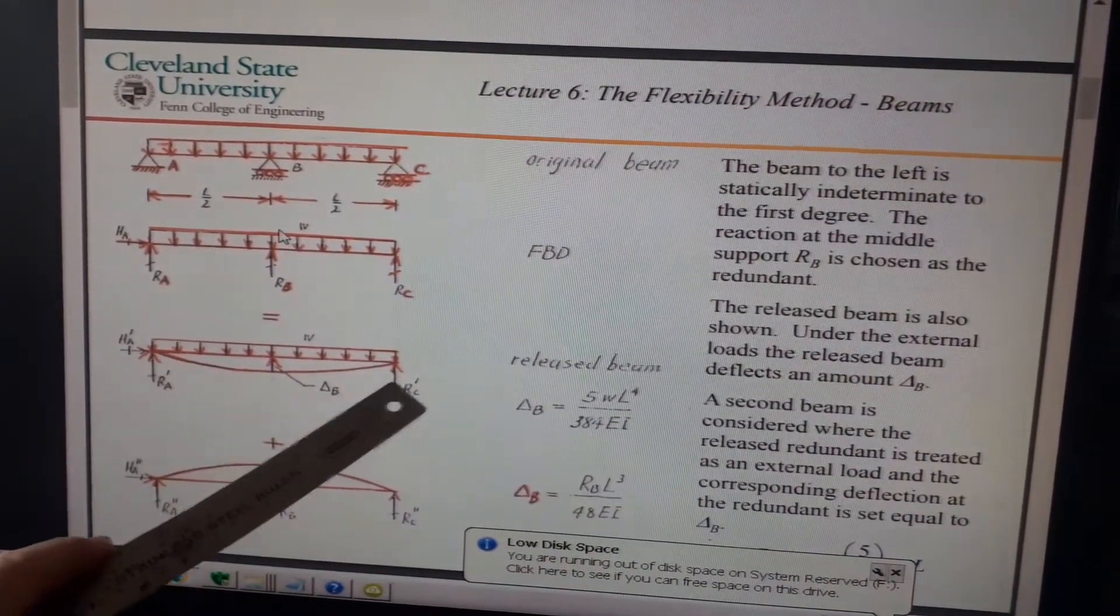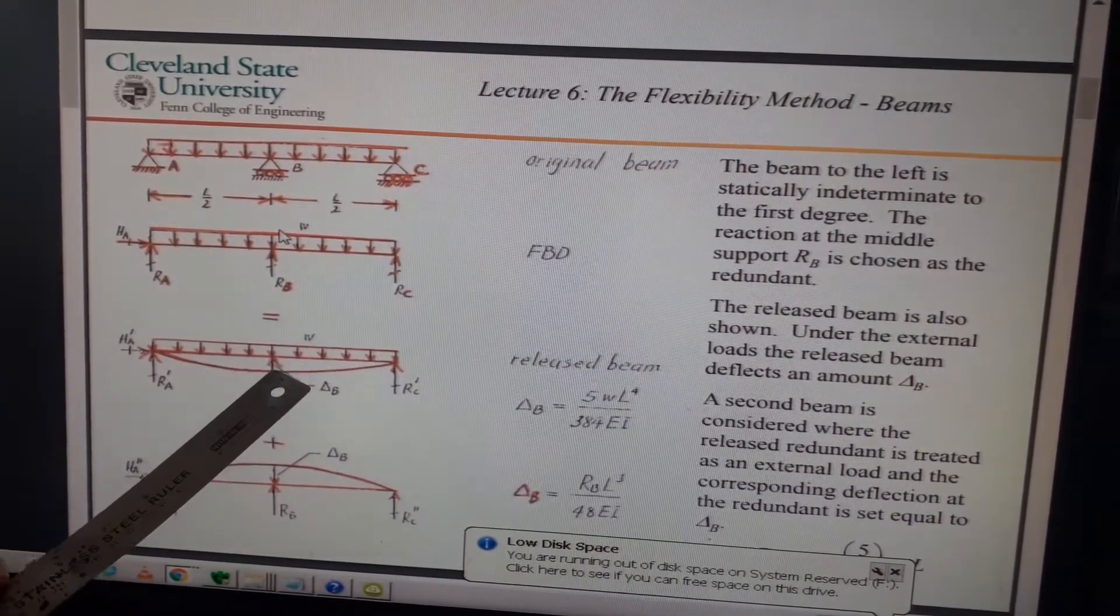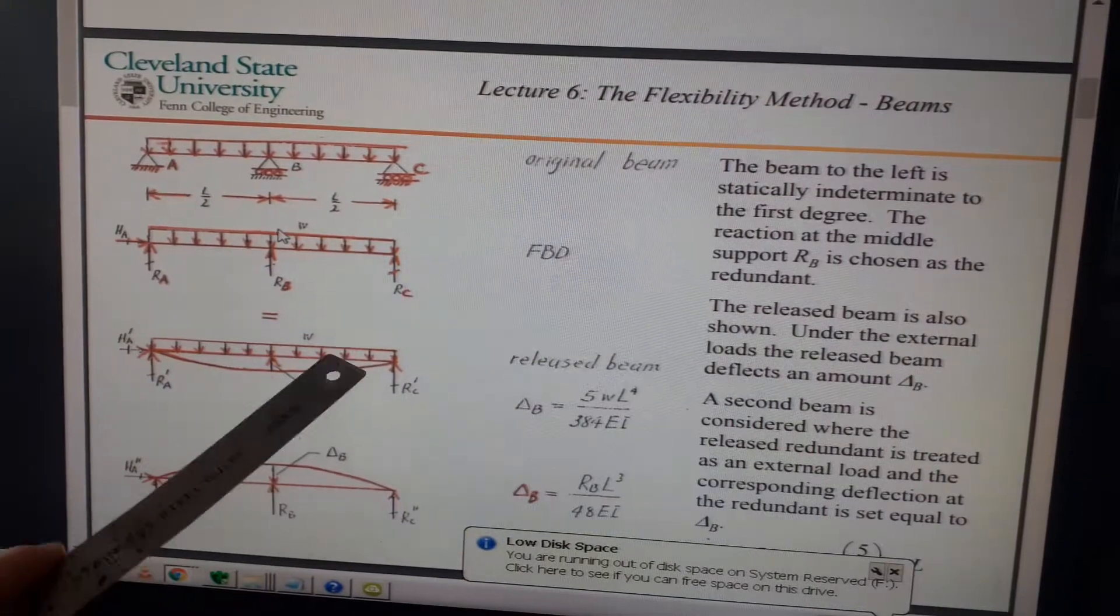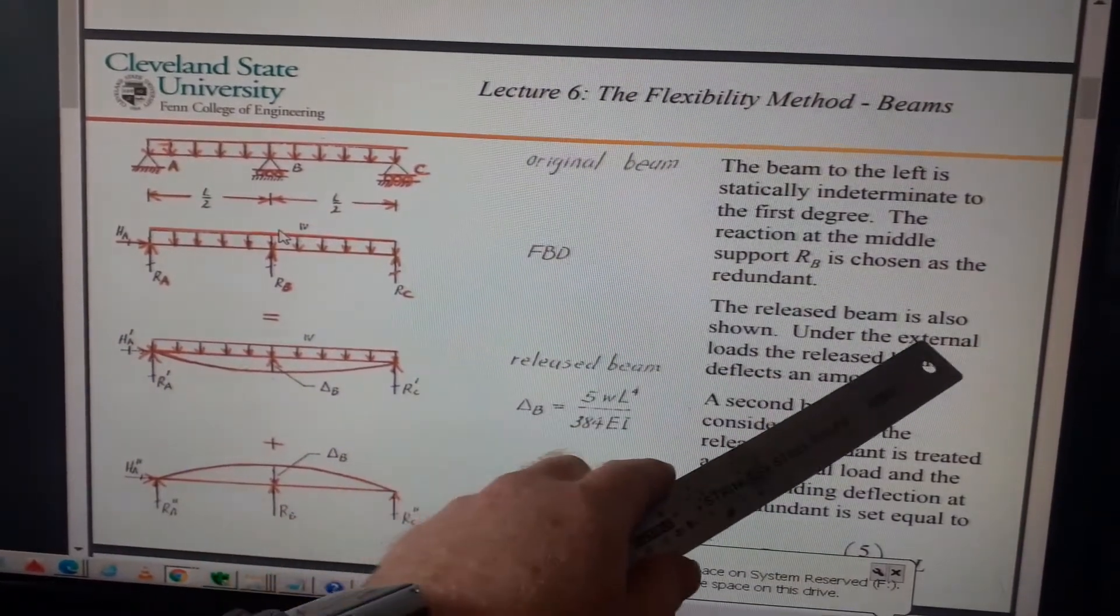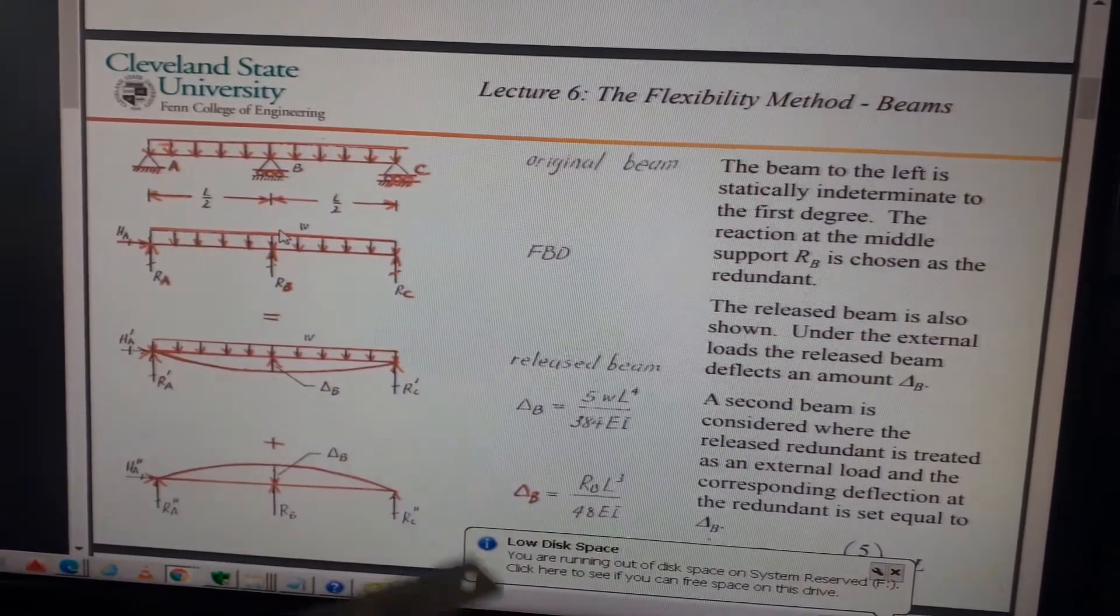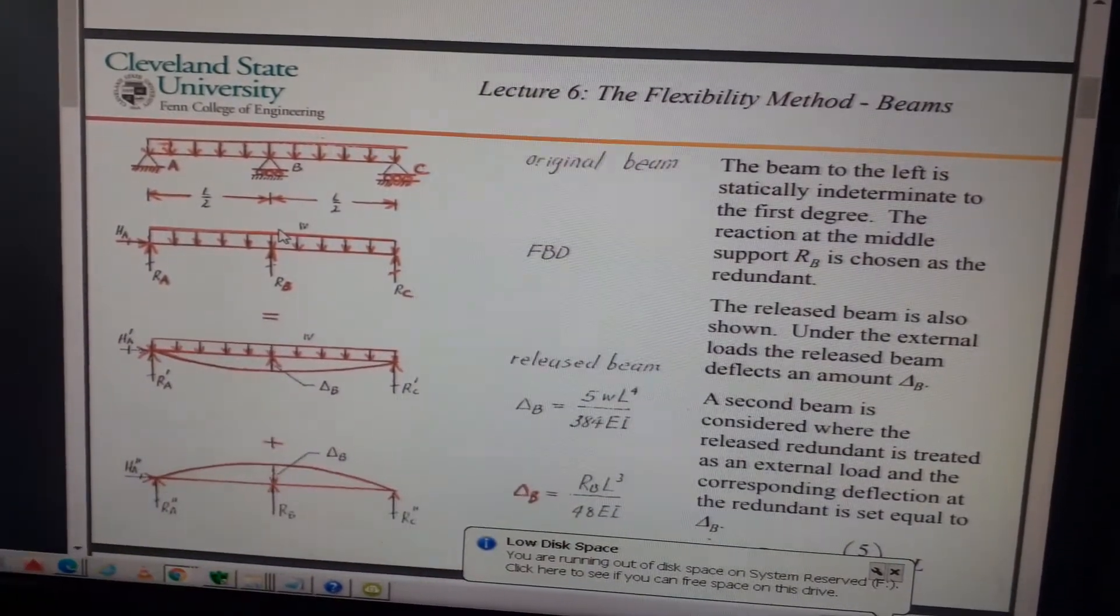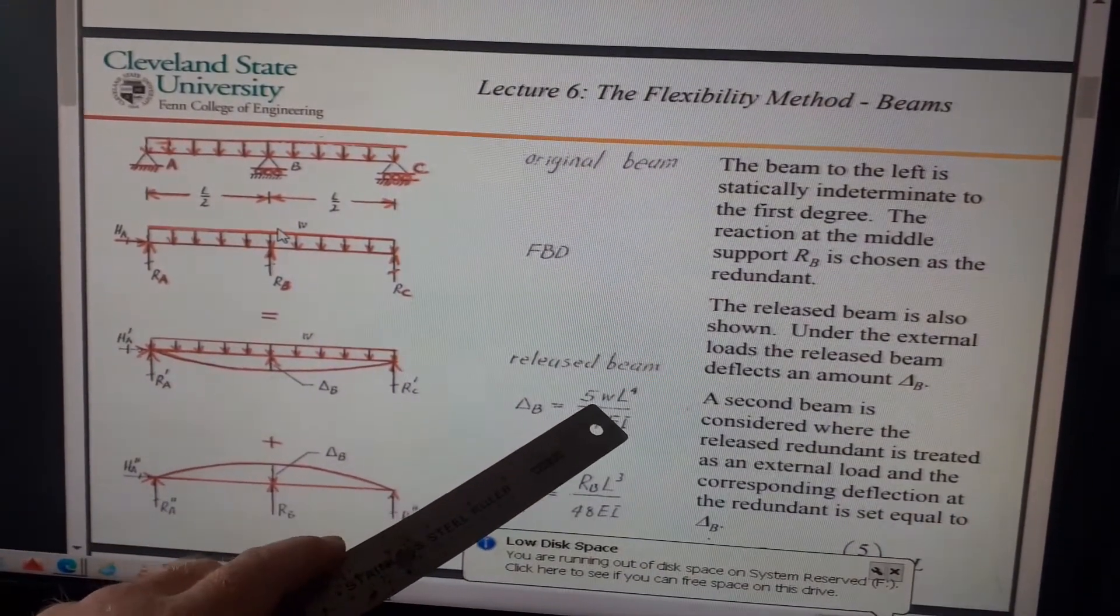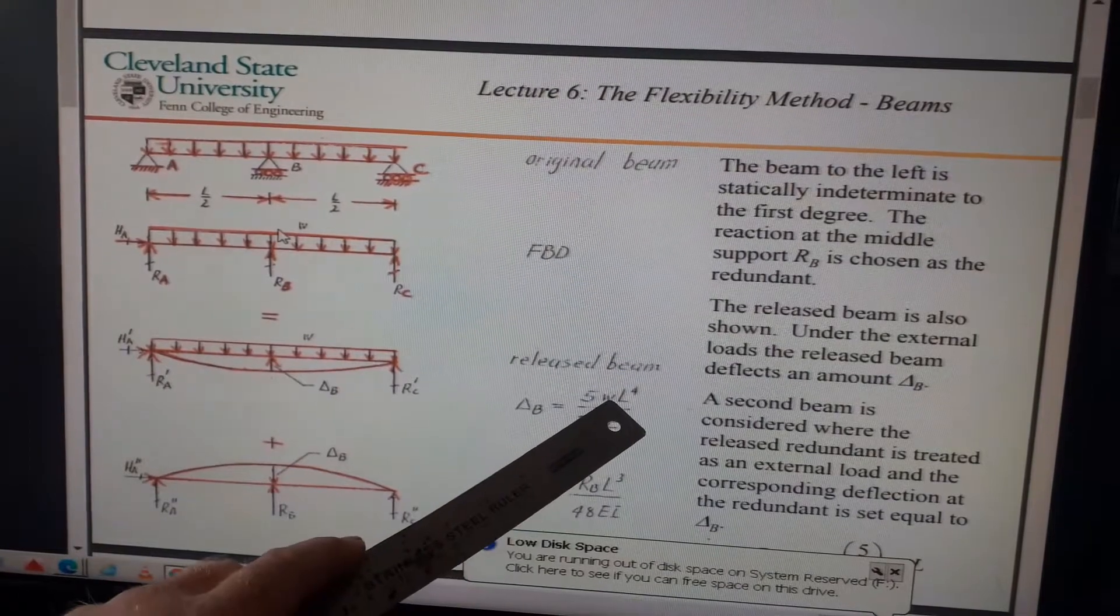The released beam is also shown. Here's the released beam: this is L, this is HA, this is RA, this is RC, and this is W. And you have a deflection at the midspan of delta_B in the vertical direction. Under the external loads, the released beam deflects an amount delta_B. We all know from very basic principles that the deflection of a simply supported beam at midspan under a UDL is, of course, 5WL to the power of 4 divided by 384EI.